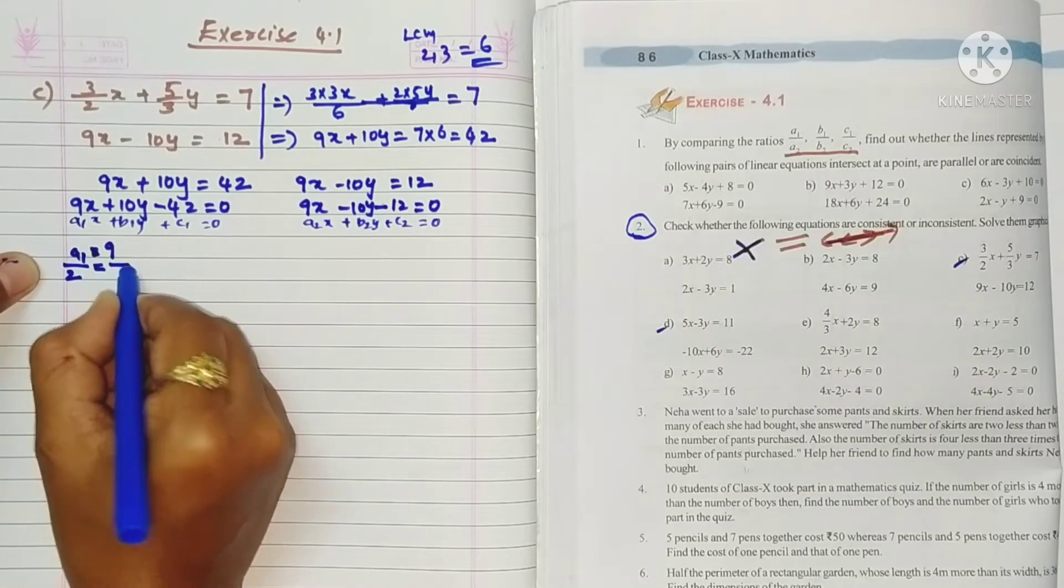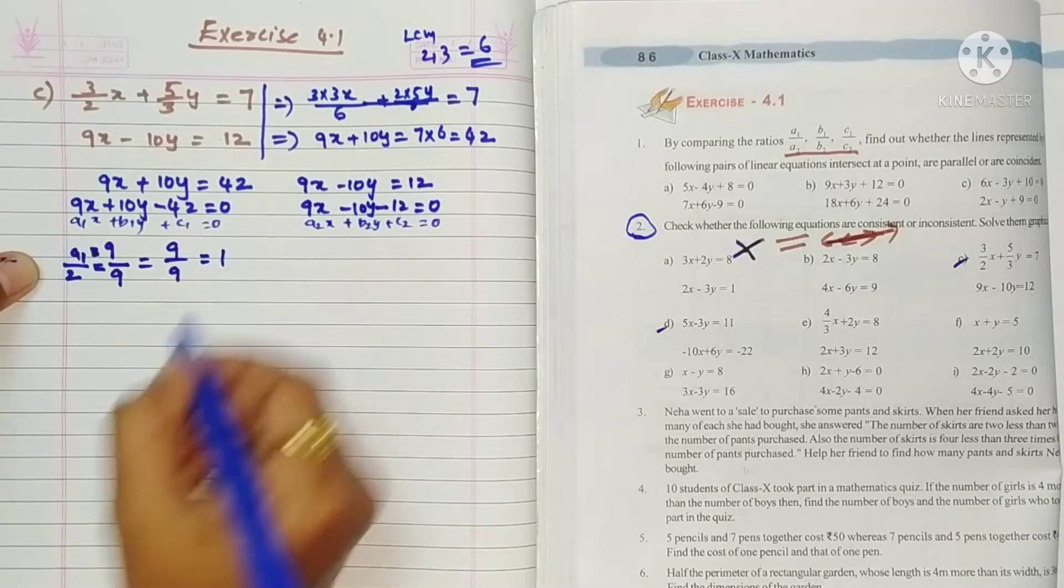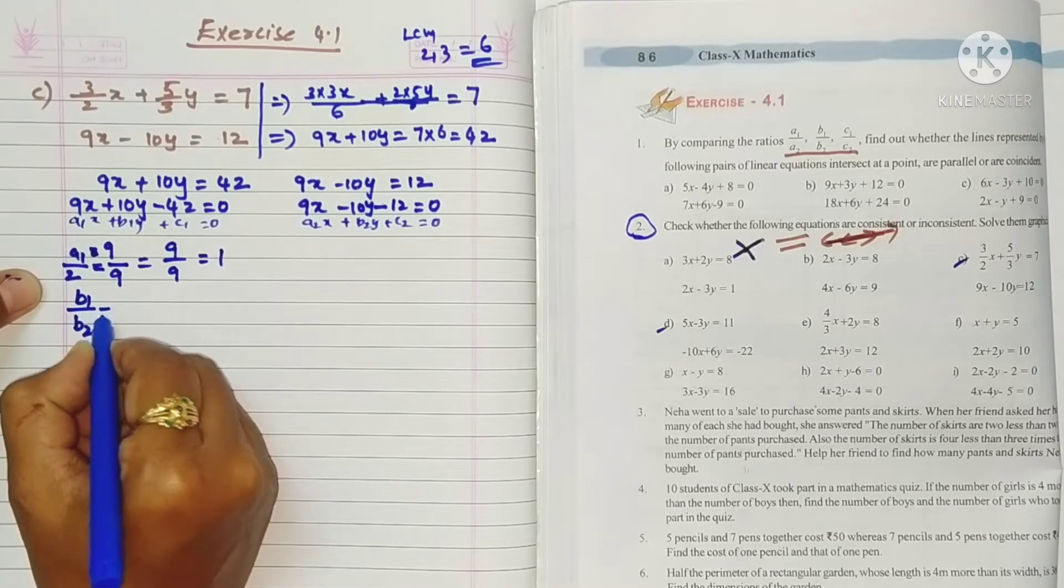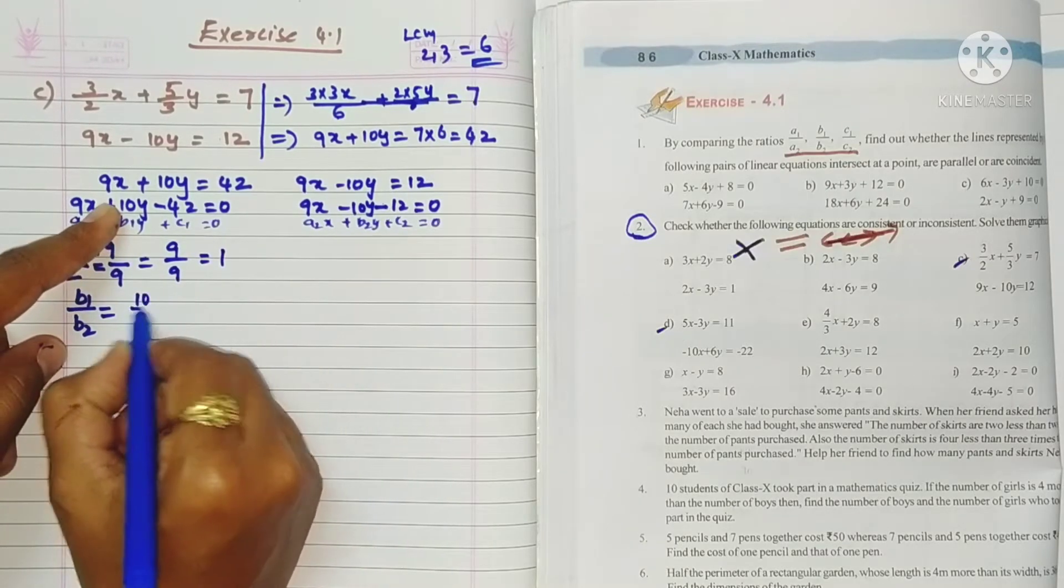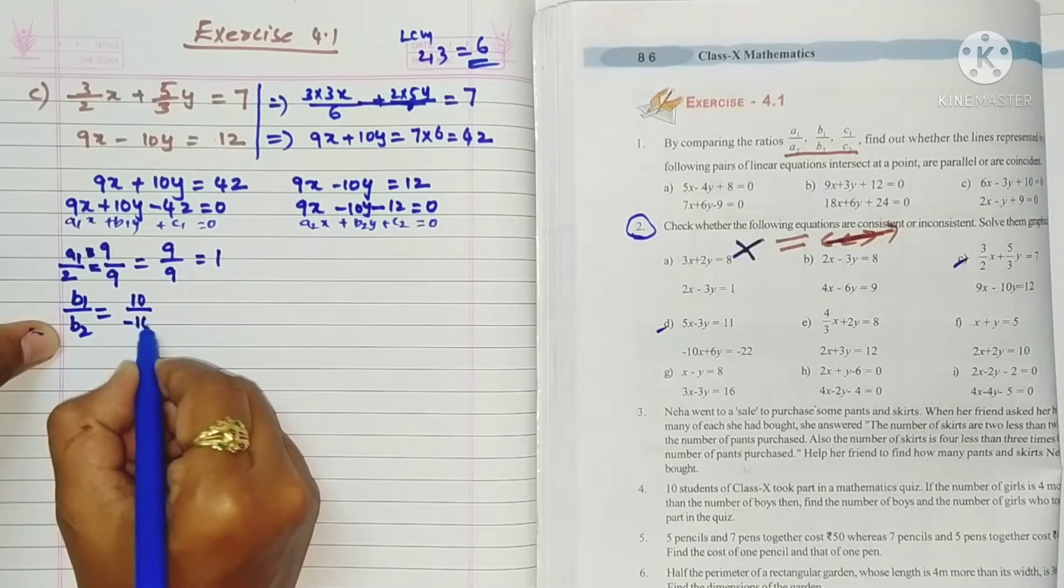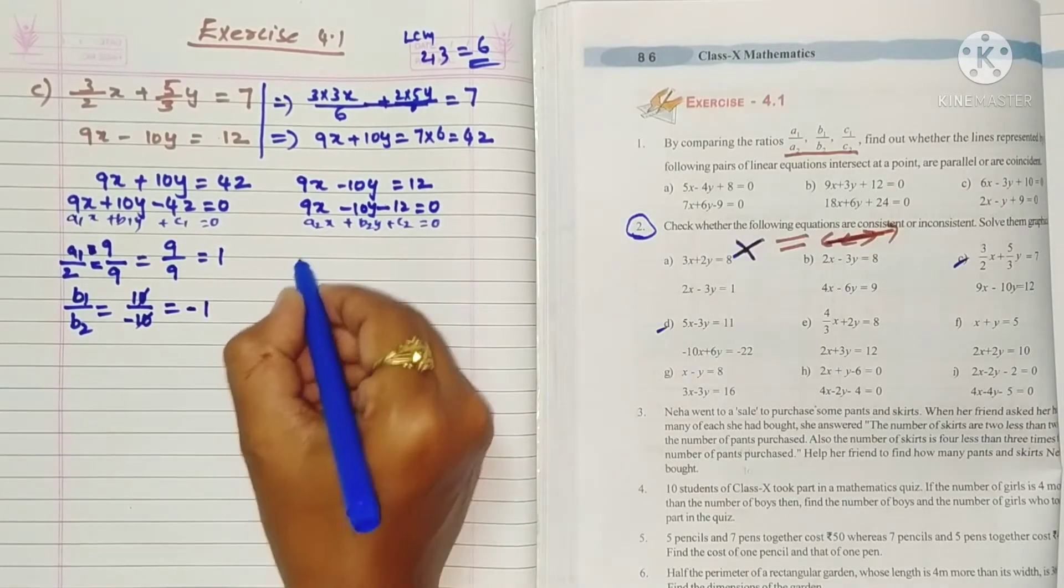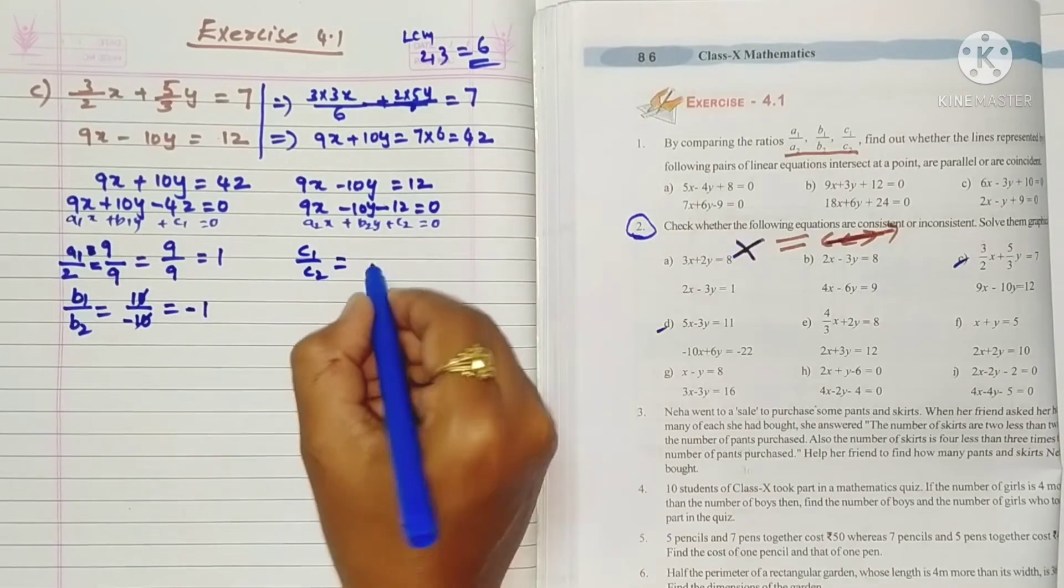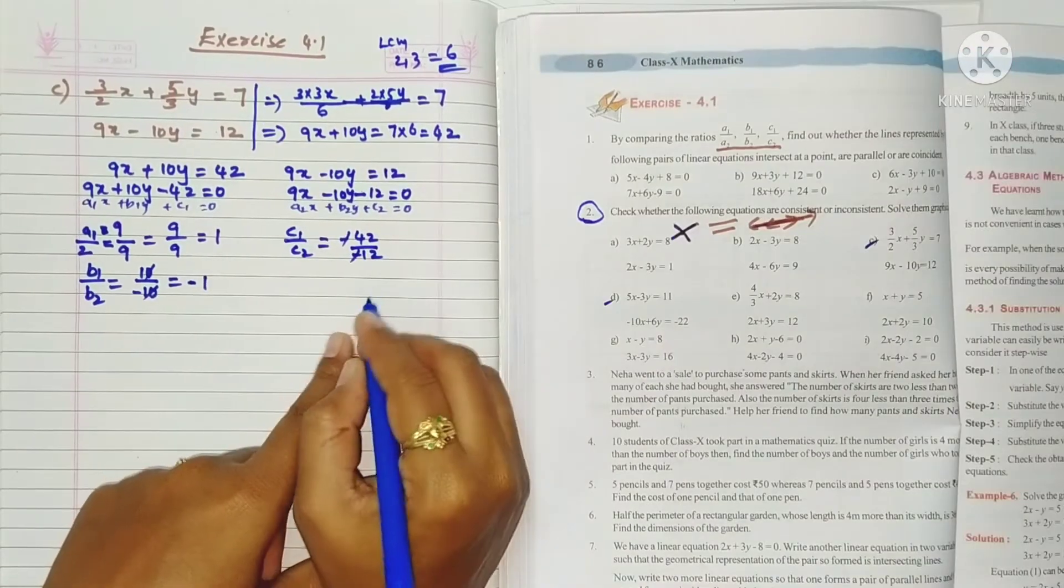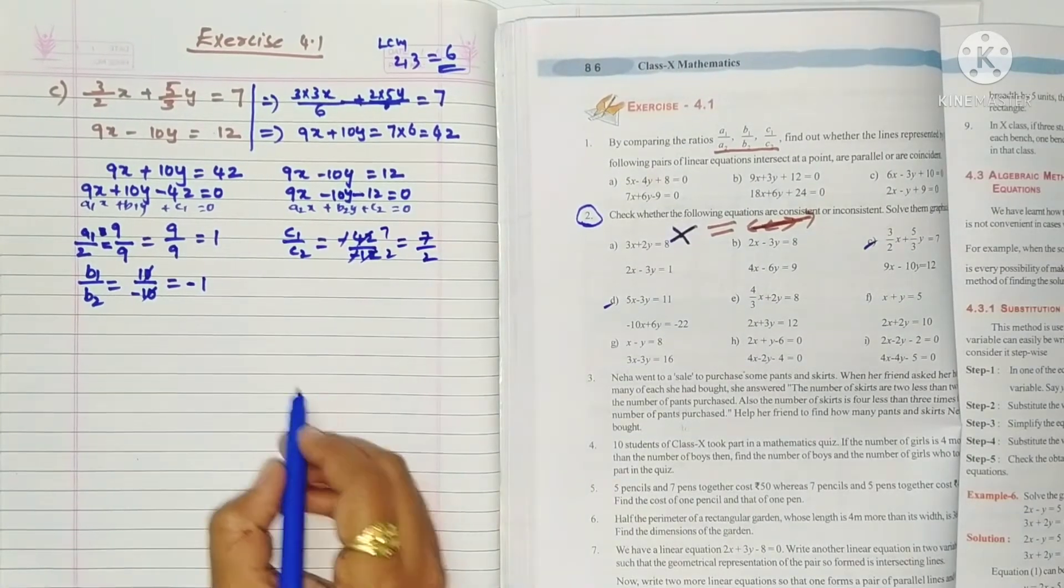Here a1 is 9, a2 is also 9. So a1 by a2 is 9 by 9 equals 1. b1 is 10, b2 is minus 10, so b1 by b2 is 10 by minus 10 equals minus 1. c1 is minus 42, c2 is minus 12. So c1 by c2, if you simplify 42 by 12, that's 6 twos and 6 sevens, so 7 by 2.